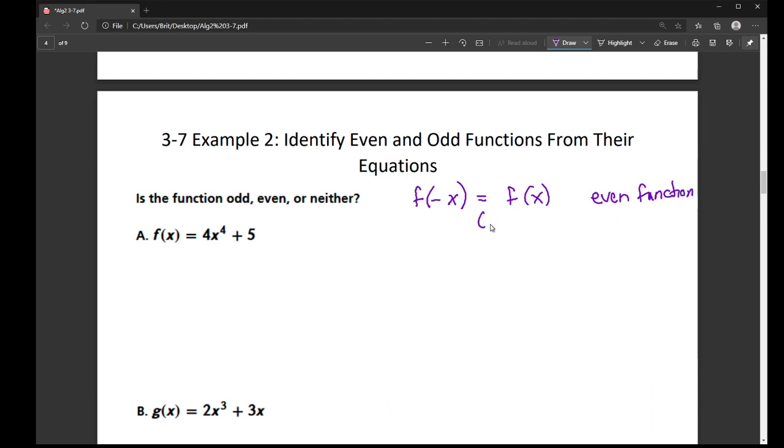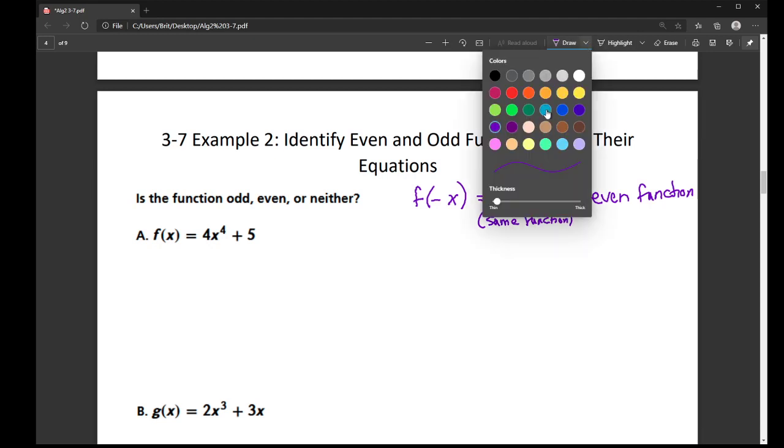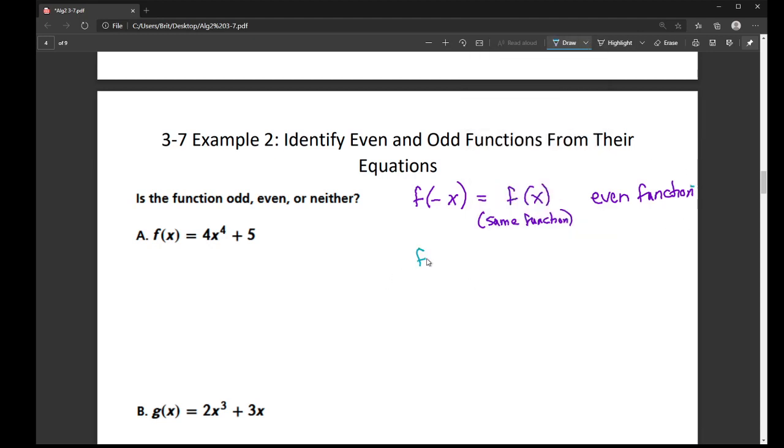Now if I plug in negative x, and the same function comes out, but every sign is changed, I'm going to get an odd function.